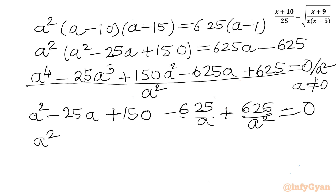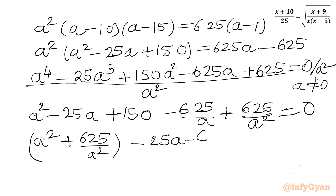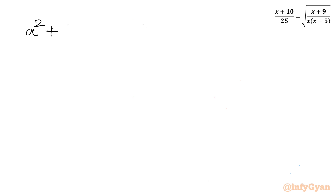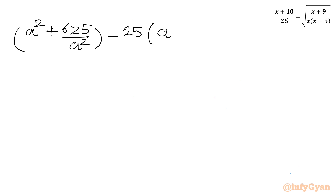Now I will collect the first and last terms: (a² + 625/a²), then consider the second and second-last terms: minus 25a minus 625/a, and then 150 equals 0. We can take minus 25 common from those middle terms, giving: (a² + 625/a²) minus 25(a + 25/a) + 150 equals 0.